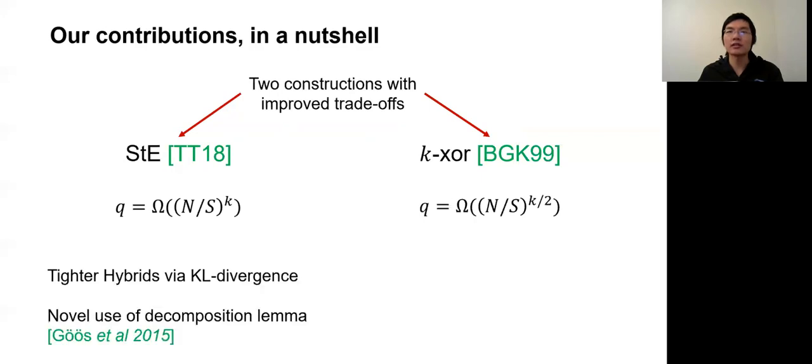In order to analyze the constructions, we use a number of techniques, some of which are novel. For example, the proof of ST relies on tight hybrids via KL divergence, and the novel use of the decomposition lemma by Goos et al. For k-xor, we leverage the connection between the security of k-xor and the list decoding of k-xor codes. In particular, we show a new and tighter combinatorial list decoding bound for the k-xor code, which is of independent interest.